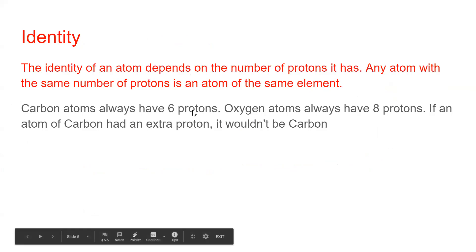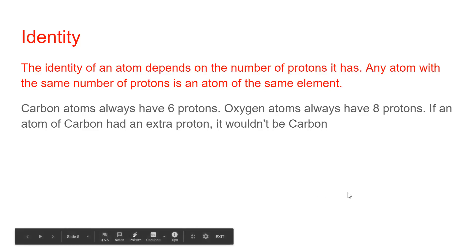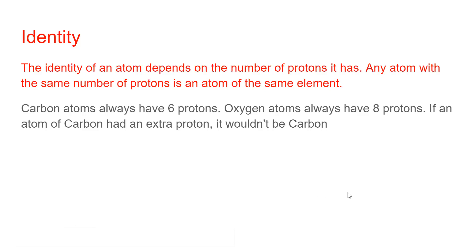Carbon always has six protons, oxygen always has eight. If a carbon atom had an extra proton it would become nitrogen; with eight protons it would be oxygen; with nine protons it would be fluorine. So the protons tell us what kind of atom it is.